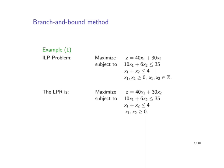In this video, we shall refer to the following example. We would like to solve this ILP problem: to maximize z equals 40x1 plus 30x2, subject to 10x1 plus 6x2 less than or equal to 35, x1 plus x2 less than or equal to 4, x1 and x2 are non-negative, and both x1 and x2 are integers. This is a pure integer programming problem.